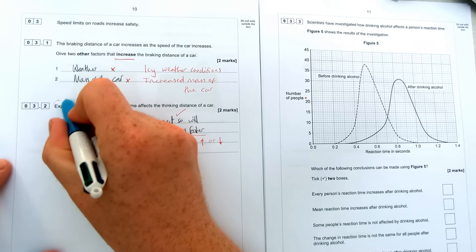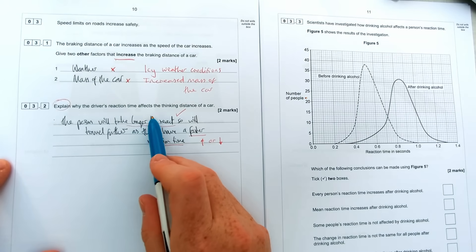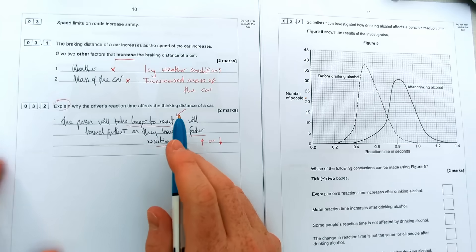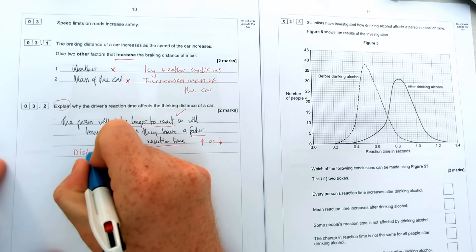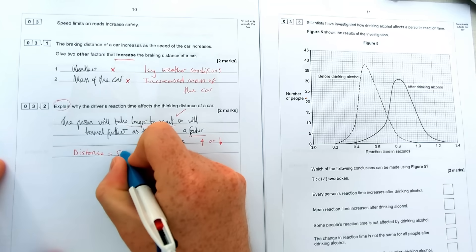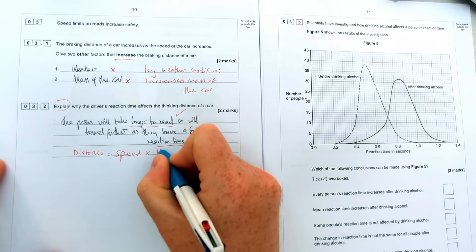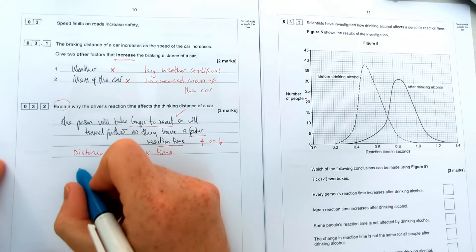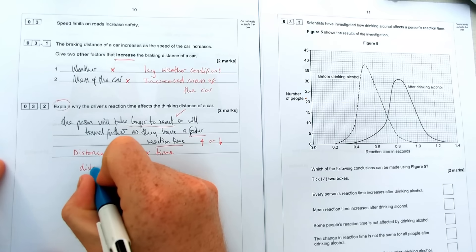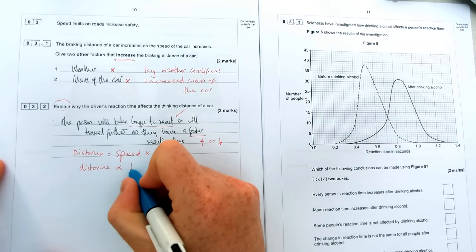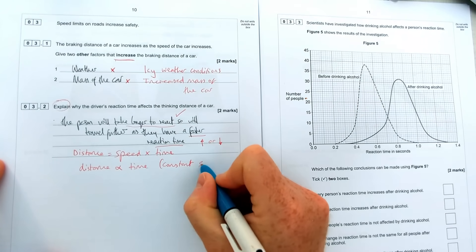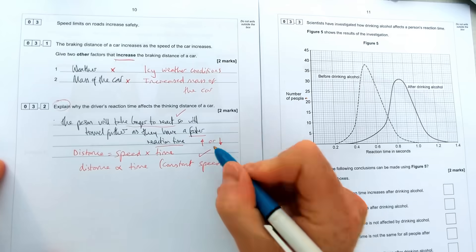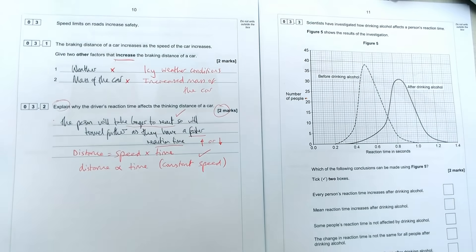It is an explained question and they haven't explained what the link is between time and distance. Now if you look on your equation sheet you'll find there is an equation for this which is to say that distance is equal to speed times by time. And if you can quote that equation with a little bit of reasoning, so you'd say distance is proportional to time at constant speed, that's how you get the second mark for linking those two together and explaining it.